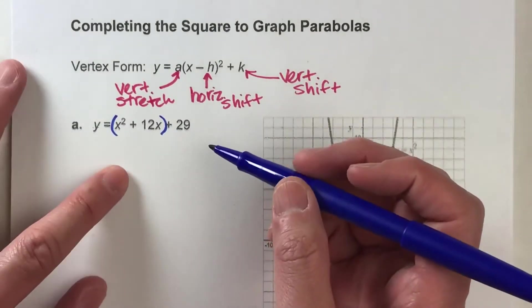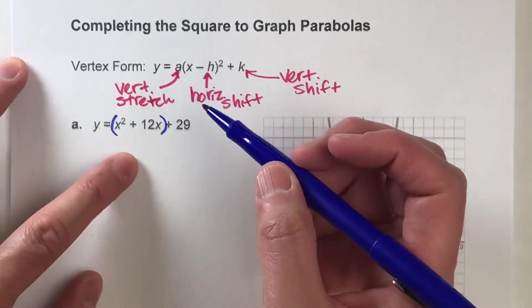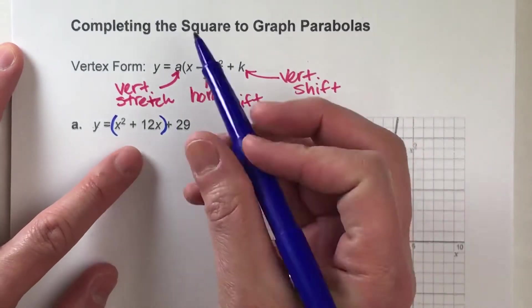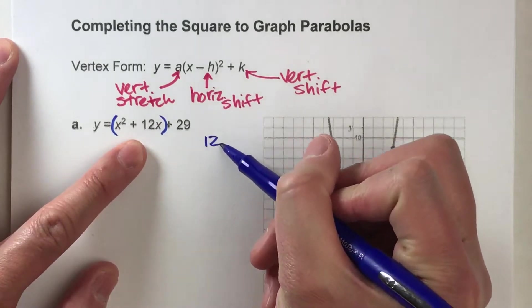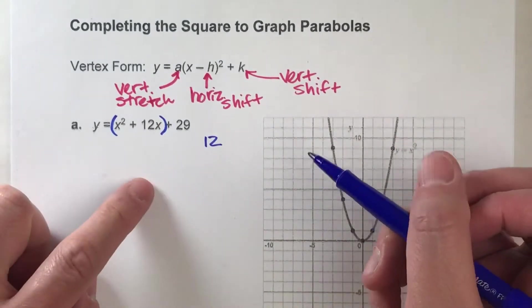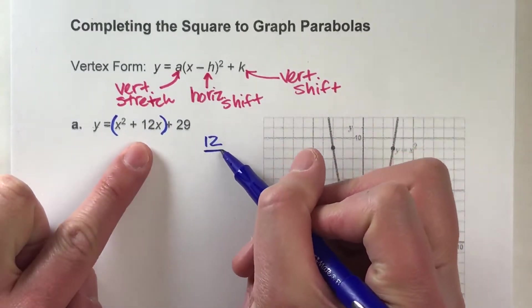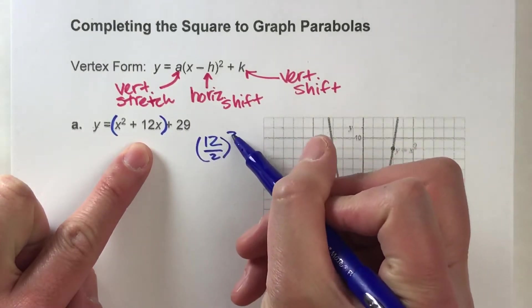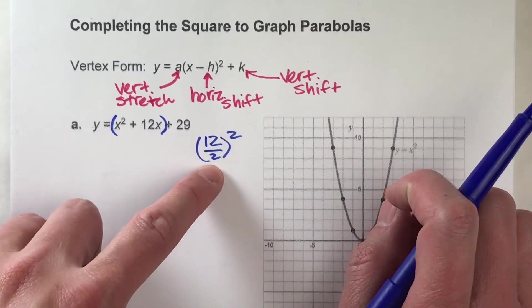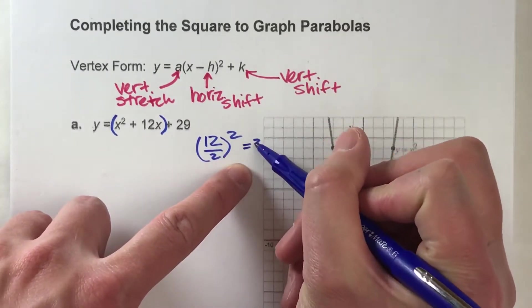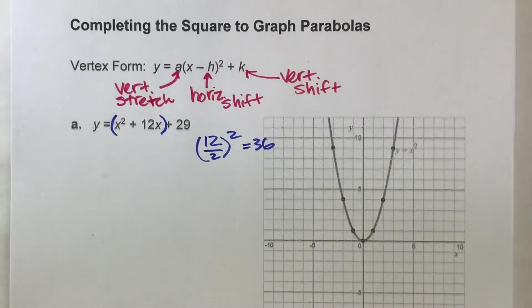Now, to make it into a perfect square, we are going to do a little formula. And the formula is this. We take the number next to x, which is 12. And then the formula is divide that number by 2 and square it. 12 divided by 2 is 6. 6 squared is 36.